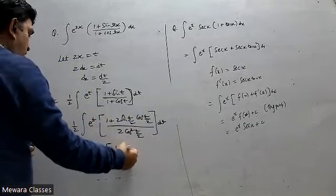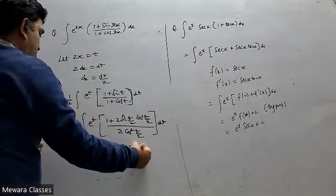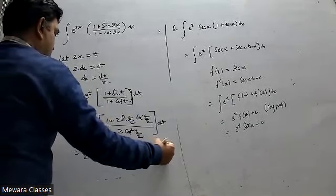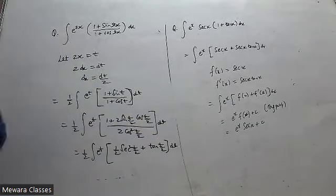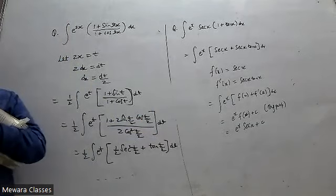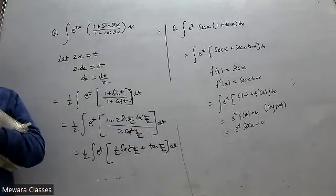So we get 1 by 2 integral of sec square t by 2 plus tan t by 2. The derivative of tan t by 2 is 1 by 2 sec square t by 2.